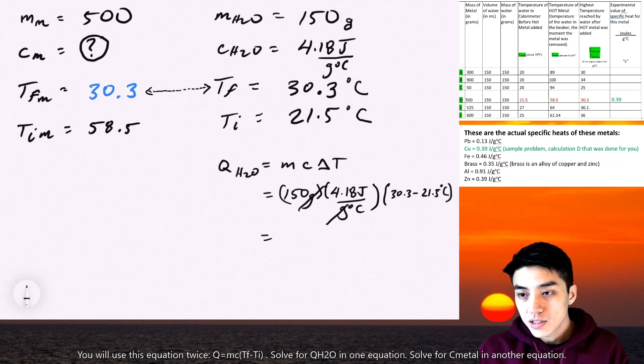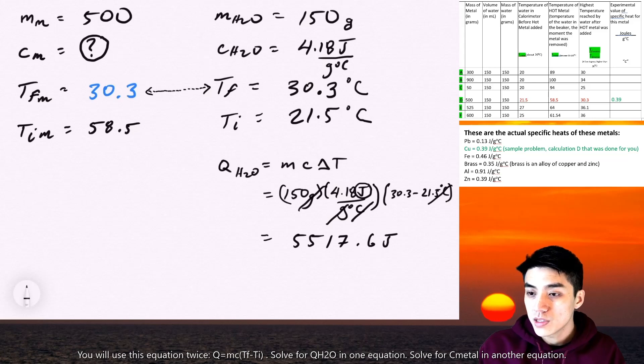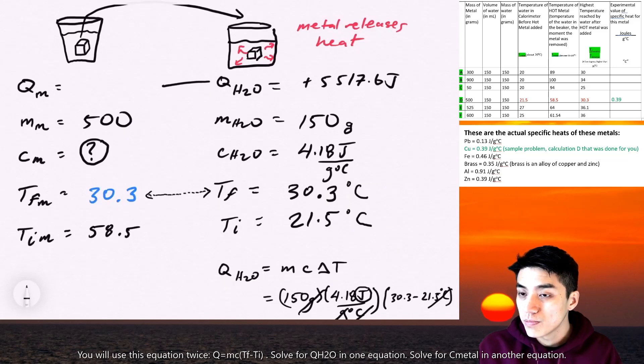So here it's plug and chug. Just make sure you cancel out your units. I'm left with joules, which is a unit of heat represented by Q. I get 5,517.6 joules and I give that a plus sign because that's the heat that's absorbed by the water.